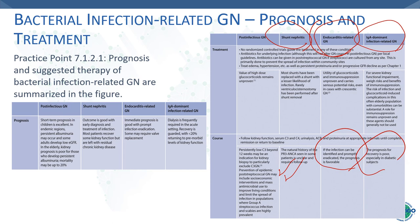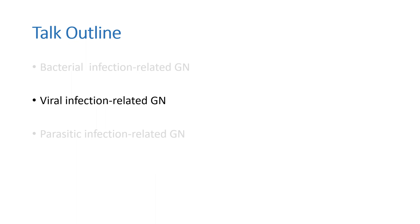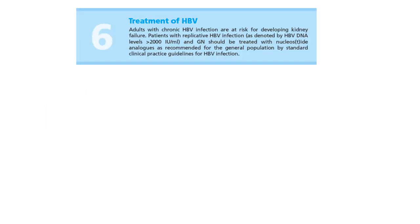That covers bacterial infection-related glomerulonephritis. Now let's briefly discuss viral infection-related GN, starting with hepatitis B virus. Any patient with chronic hepatitis B virus infection is at risk of developing kidney failure. Any patient with hepatitis B virus infection and glomerulonephritis whose HBV DNA level is more than 2,000 units per mL must be treated with nucleot(s)ides, as recommended for the general population. There is no role for pegylated interferon.